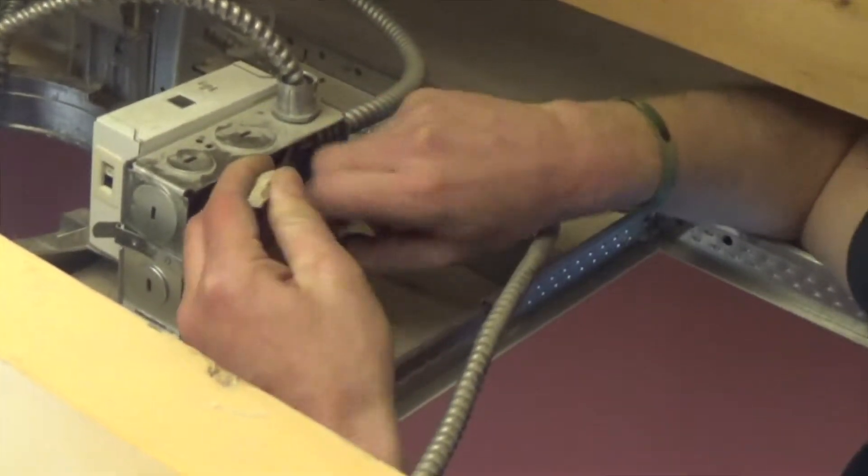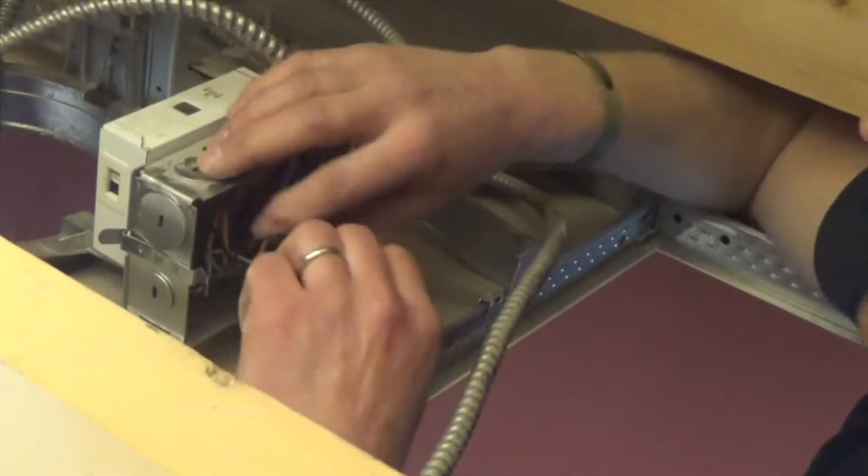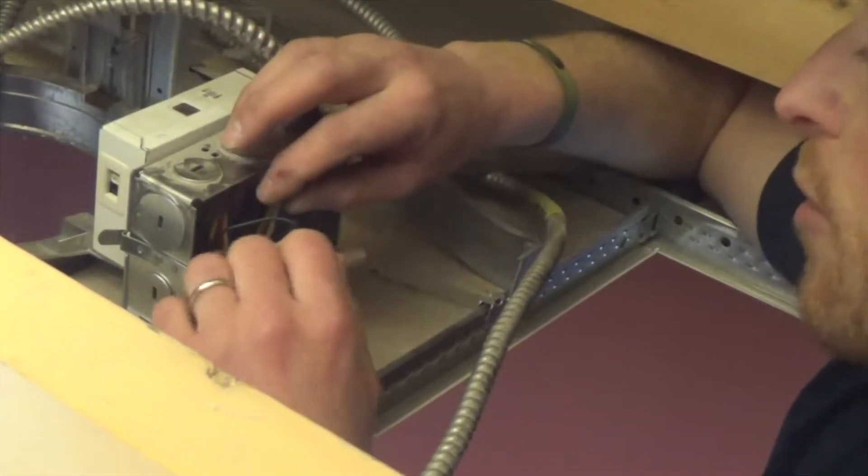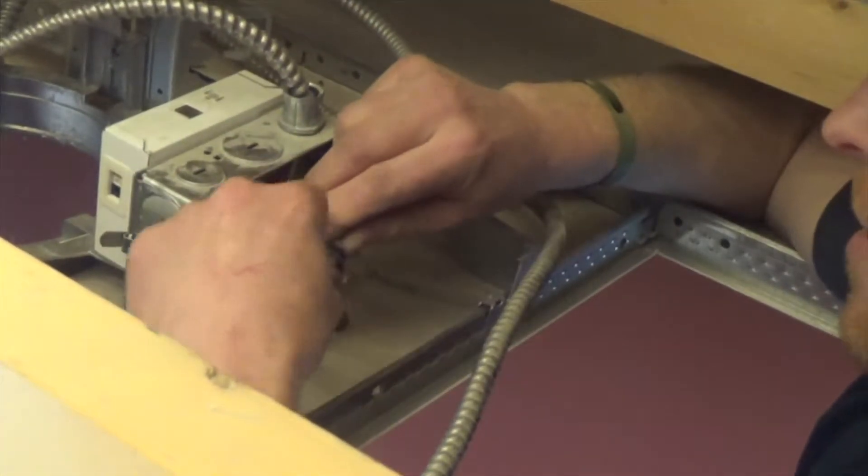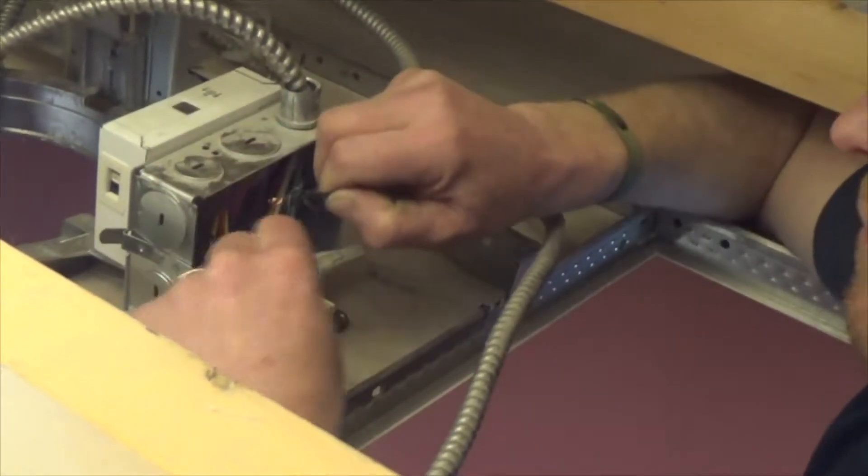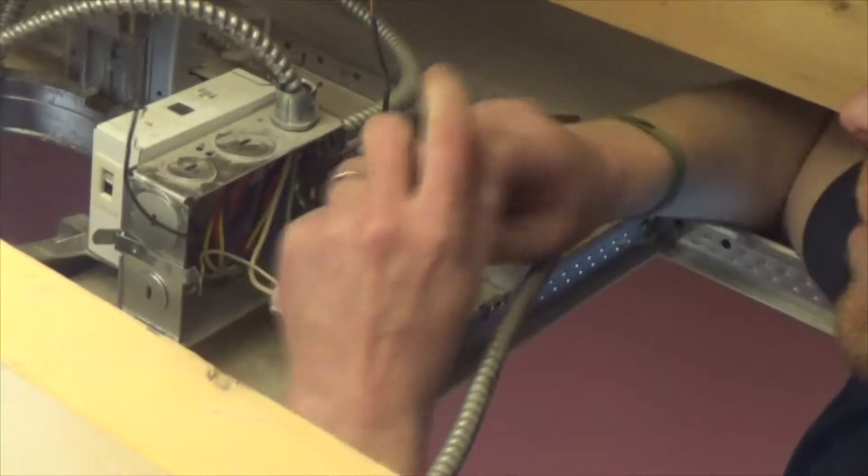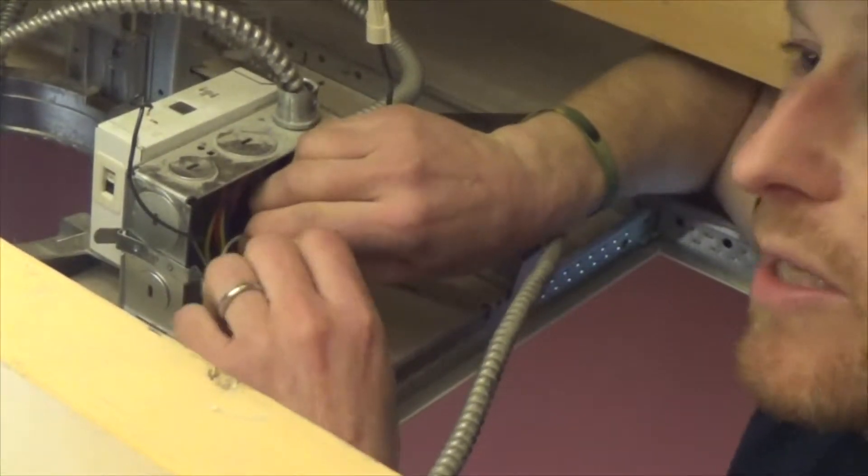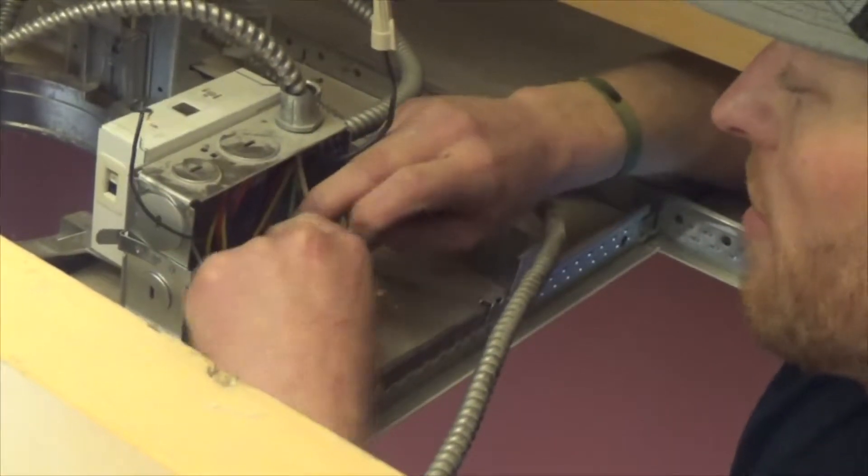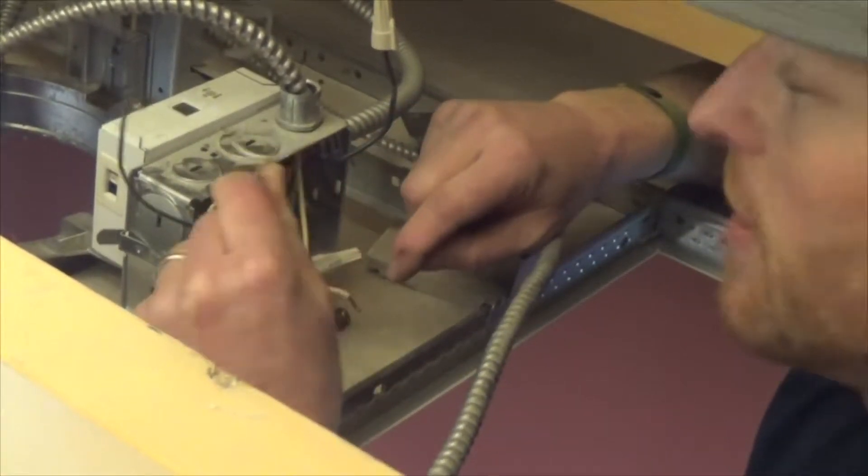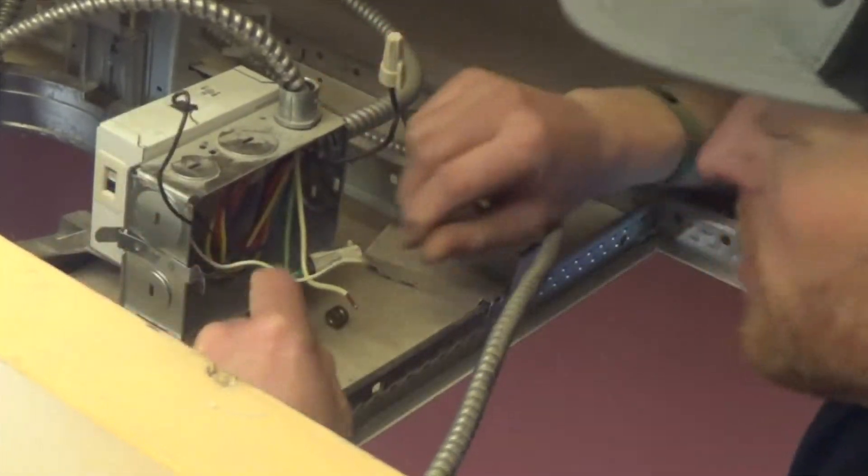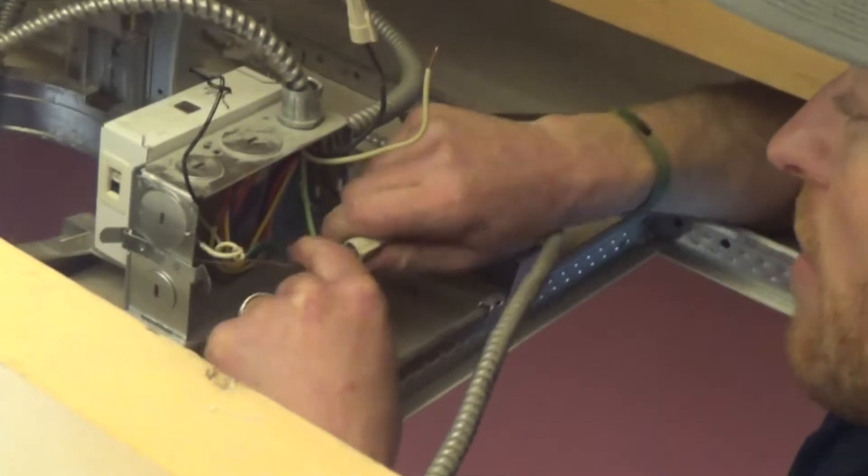So again, what I like to do is disconnect my black even though there is no power here. We're assuming—no, we checked it for sure. We're going to disconnect the black first. That way when I, in the event there was power here, I would not have any power on my whites. If I start to disconnect my whites, there's a chance the white coming back from the fixture could be hot if I leave my blacks hooked up. So I always disconnect my blacks first, then my whites, and now the grounds.